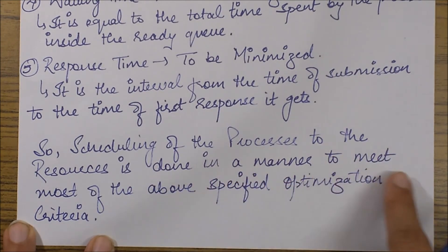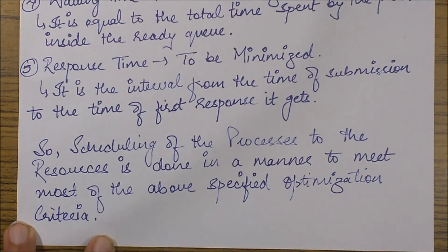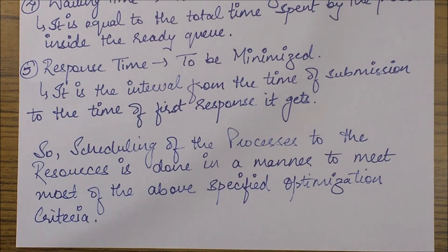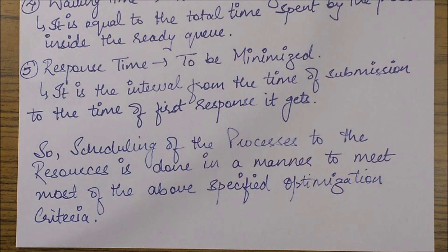To conclude, scheduling of a process to resources is done in a manner to meet most of the above specified optimization criteria. Since we have around five optimization criteria, it may not be possible to meet all of them optimally at the same time. There might be trade-offs between them. Depending on which criteria matter more, that defines the choice of scheduling algorithm. We will be discussing the scheduling algorithms in great detail in the next sessions.